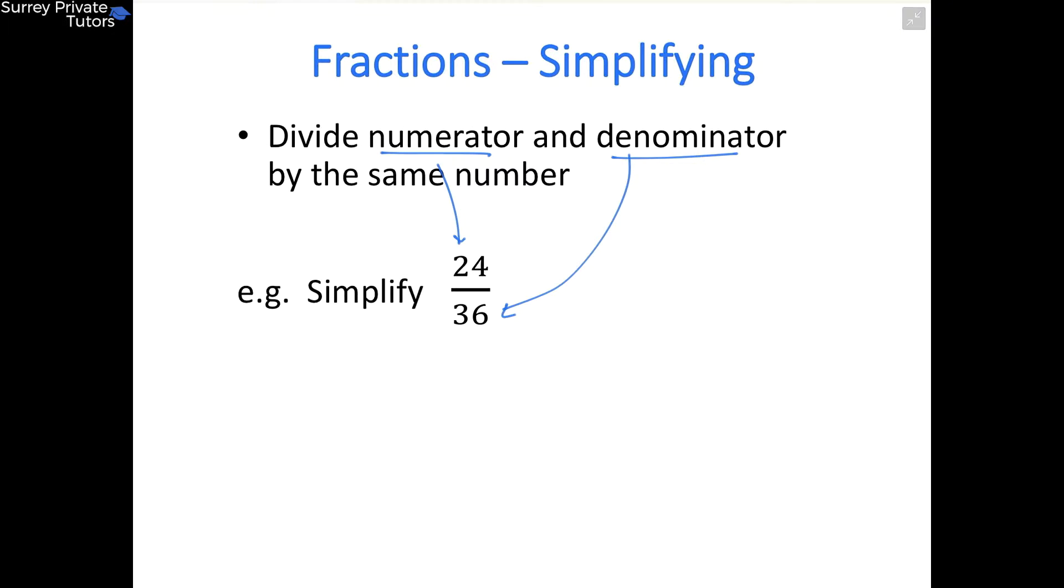To simplify a fraction, divide the numerator and denominator by the same number, preferably as big a number as possible. If you look at 24 and 36, you can see they can both be divided by 6.